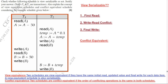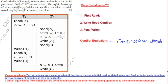For conflict equivalent schedule we will check the operations or instructions which are conflicting. There are two transactions T1 and T2. Conflict equivalent means you have to find if the schedule is conflict serializable or not.